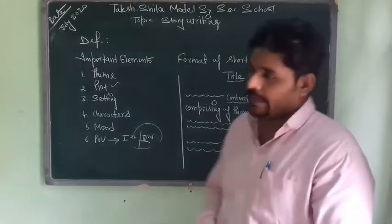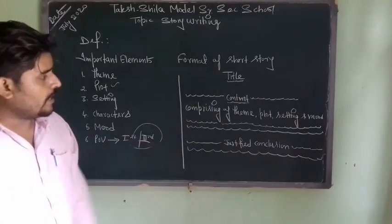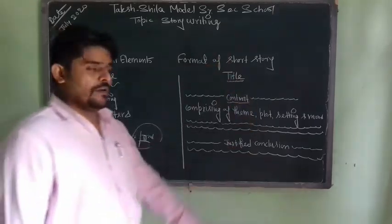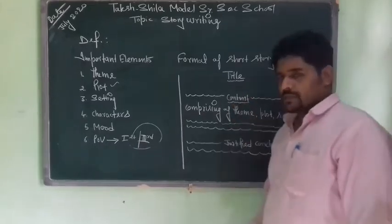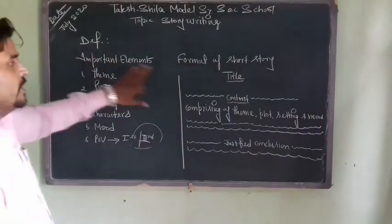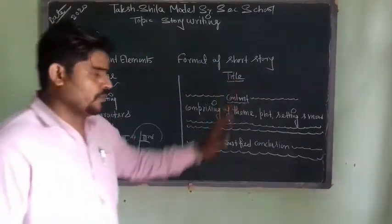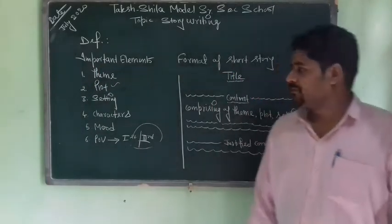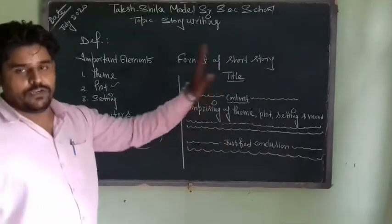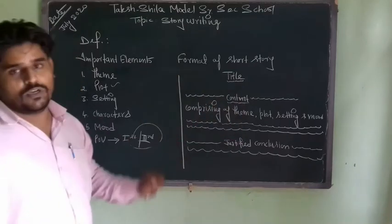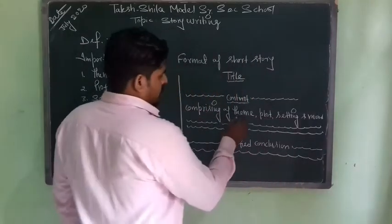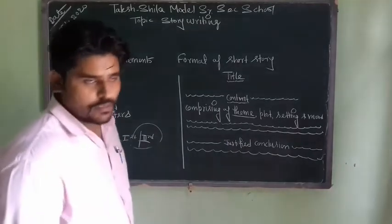One more thing — the seventh point is conclusion. You must end your story with an emphatic conclusion that gives a complete message. Now let us take a look at the format of story writing. On the board I have written the format. First, write the title in the middle of the paper. The title is not given to you in the question — you need to frame the title based on the theme of the story. For example, if your theme is honesty, you can title it 'Honesty is the Best Policy' or 'An Honest Man.' After writing the title, pay proper attention to the content.